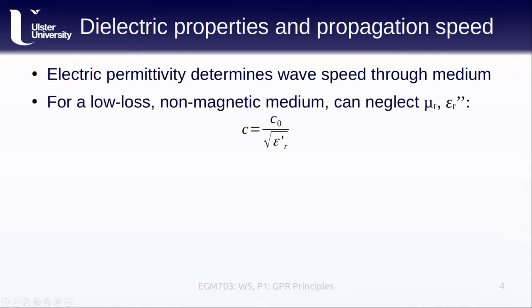For a number of materials that we might use GPR to see through, we can consider them to be low-loss, non-magnetic materials. That is, we neglect the magnetic permittivity and the imaginary part of the electric permittivity. In that case, the speed that the signal travels through the material is given by the speed of light in a vacuum, C0, divided by the square root of the real part of the electric permittivity, or the dielectric constant. As the electric permittivity increases, the speed will decrease, that is, the signal is going to slow down.